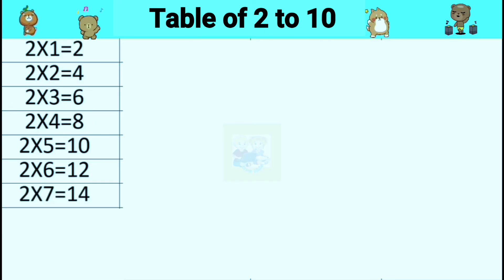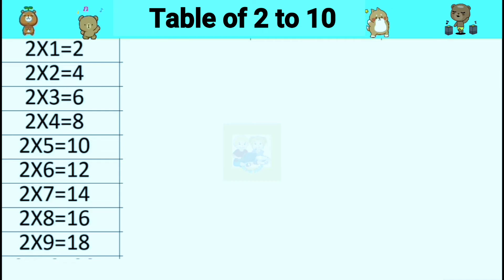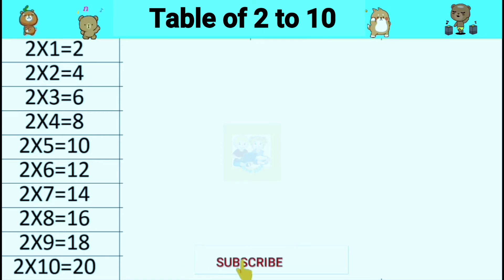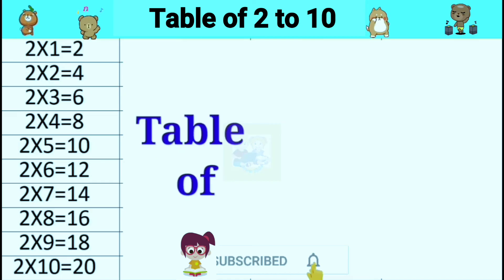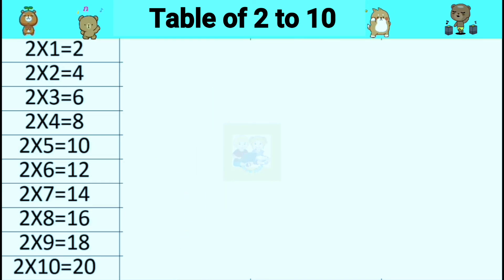Two sevens are fourteen. Two eights are sixteen. Two nines are eighteen. Two tens are twenty.